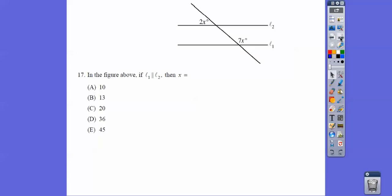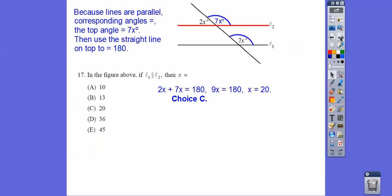All right, so here, parallel lines. Parallel lines means we have corresponding angles that are equal. So if that's 7X, that's 7X. This straight line is 180, so these two add up to 180, so we get X equals 20.